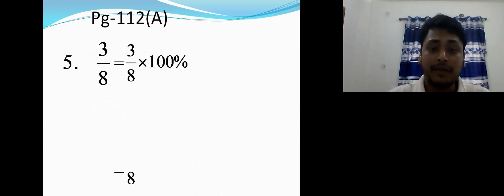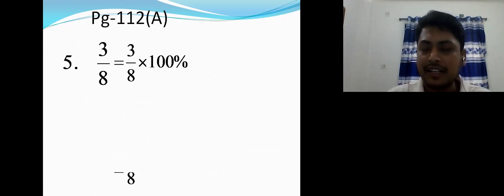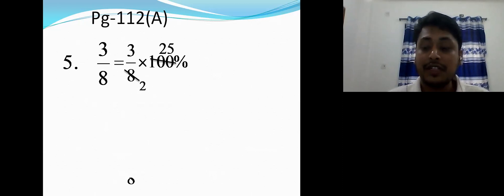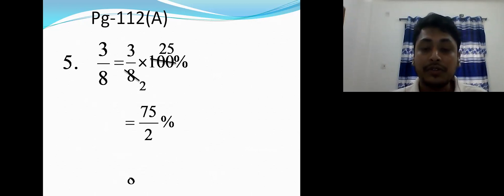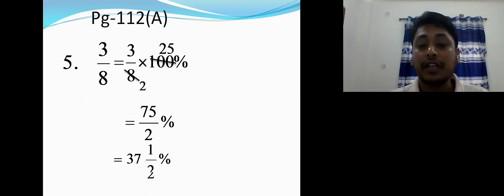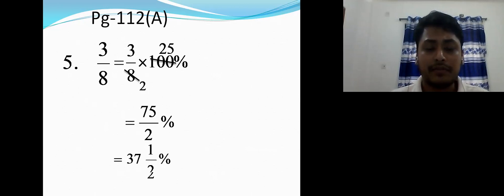Now 3/8 — the same way, multiply by 100 percent. Divide 4 into 8 and 4 into 100: 8 divided by 4 is 2, and 100 divided by 4 is 25. We cannot cancel more, so the upper number is 75 and the lower is 2. Now we have to do division, and the answer should be shown as a decimal.